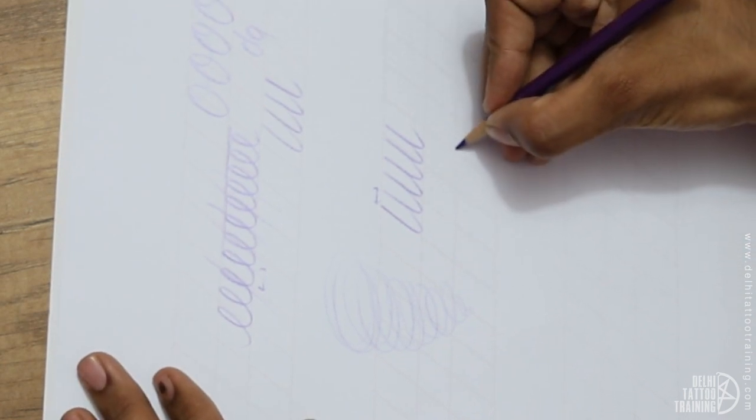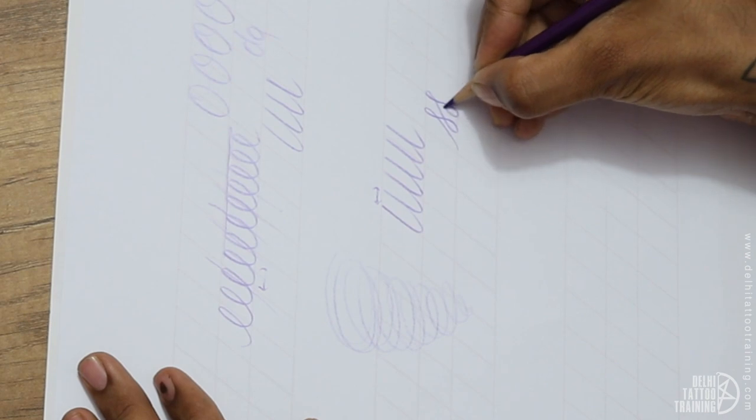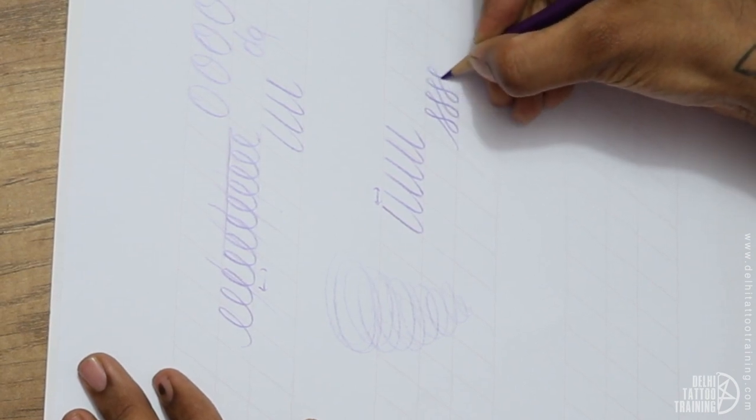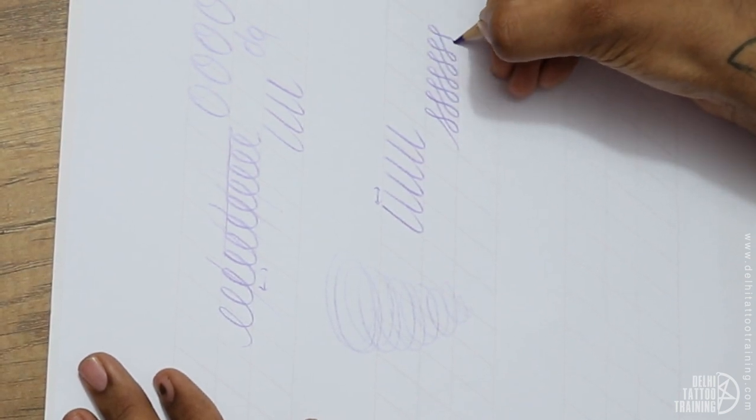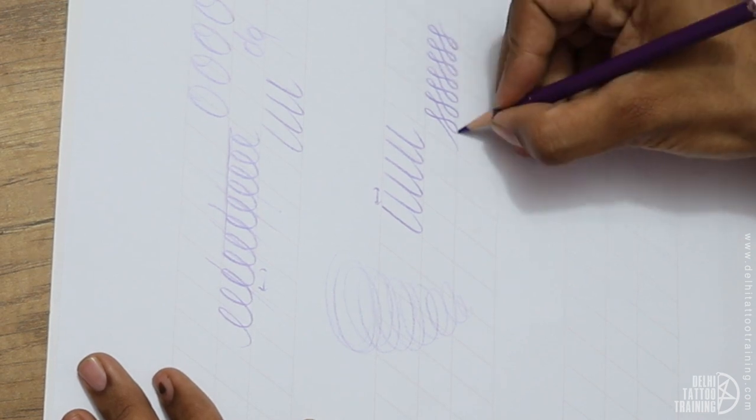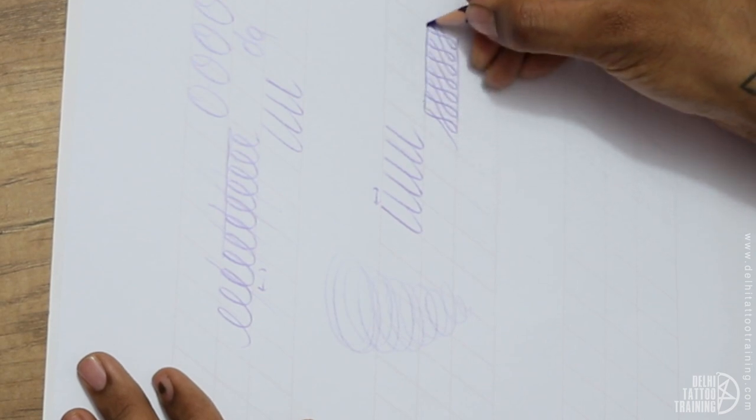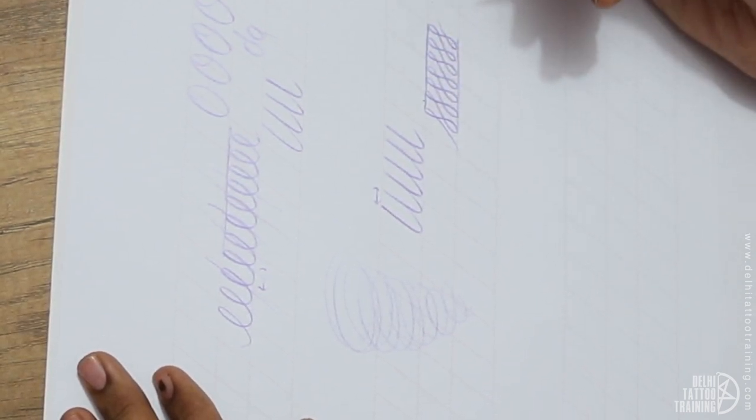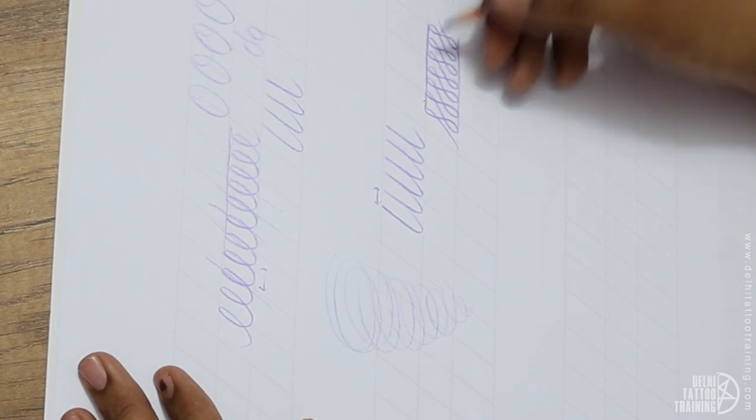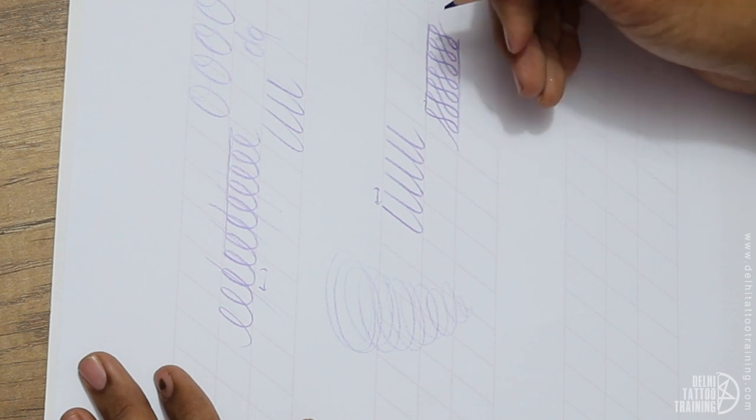The last thing I can suggest you is to make some s-curves. These are like infinity knots. This is also to train your hand and the muscle. Everything comes with practice. Just make sure you don't go beyond the lines. The size of the loops also should be the same. Everything combined together will help you to have a good calligraphy.